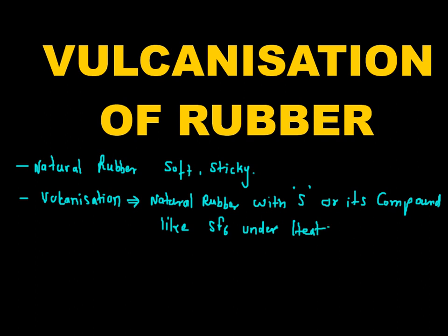So in vulcanization we just heat natural rubber with sulfur or its compound to provide more strength and enhance the property of natural rubber.